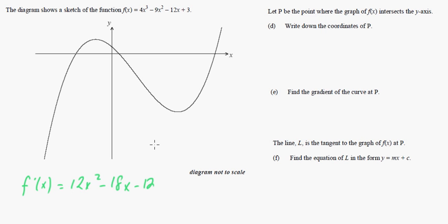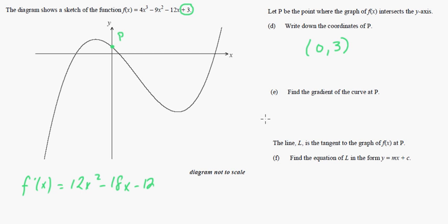The next question says: let P be the point where the graph intersects the y-axis — that's right there. Write down the coordinates of P. Well, it's on the y-axis, so x equals 0. We just make x equal 0 in the function: all the x-terms become 0, and we're left with 3. So the coordinate is (0, 3). The constant term is always the y-intercept.